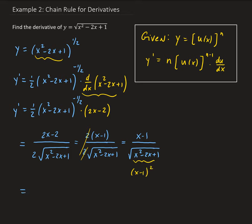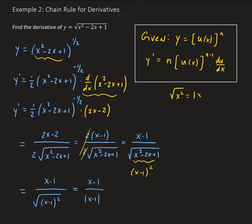So we have x minus 1, all divided by the square root of (x minus 1) squared. Taking the square root of (x minus 1) squared gives us the absolute value of x minus 1 — not the square root, the absolute value. This comes from the property that the square root of x squared equals the absolute value of x, because we don't know the sign of x.